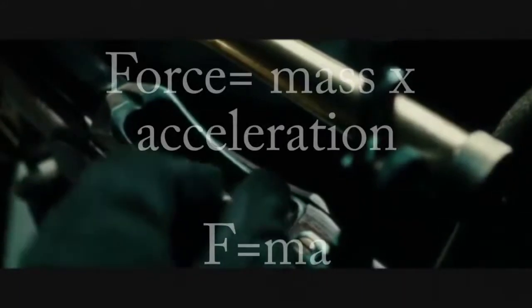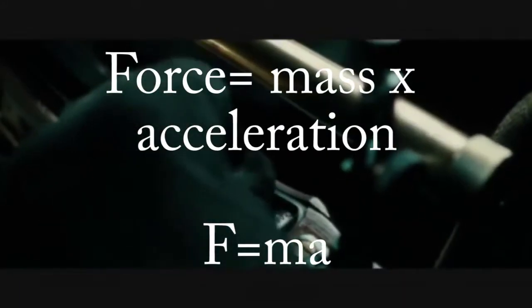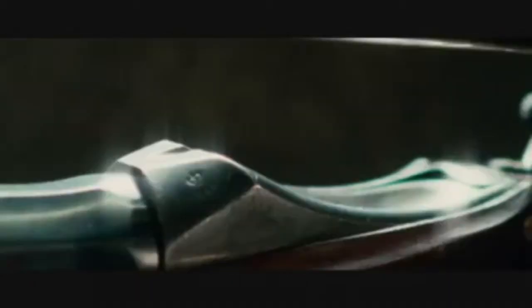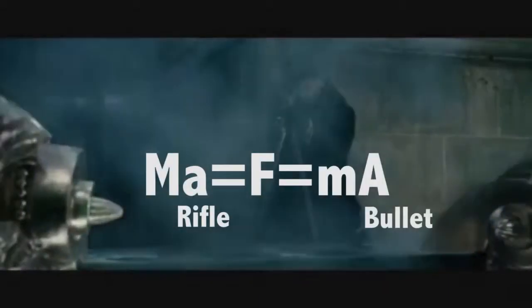Newton's third law is when one body exerts a force on a second body, the second body simultaneously exerts a force equal in magnitude and opposite in direction to that of the first body. The equation for finding the force is force equals mass times acceleration. In this scene, the rifle exerts an equal force on the bullet as the bullet exerts on the rifle. Yet the bullet moves much faster than the gun, because the mass of the gun is much larger than the mass of the bullet.